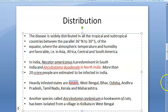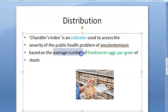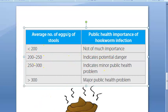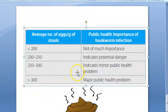Ancylostoma duodenale is found a lot in North India, especially in Assam and surrounding regions. To recap: Chandler's Index is the average number of hookworm eggs per gram of stool. Less than 200 — not much importance; 200–250 — potential danger; 250–300 — minor public health problem; greater than 300 — major public health problem.